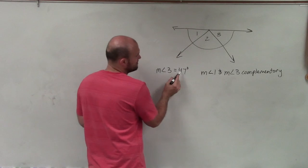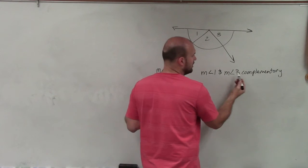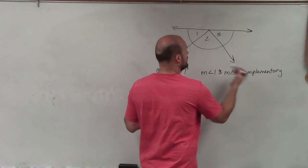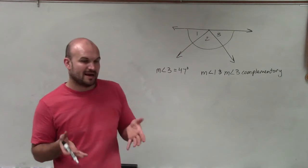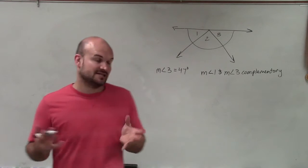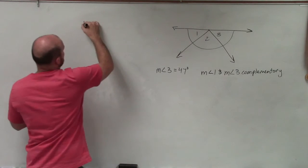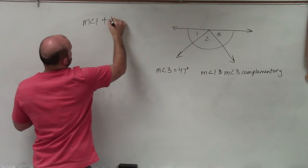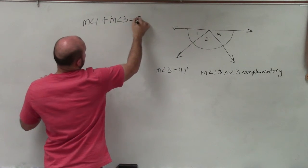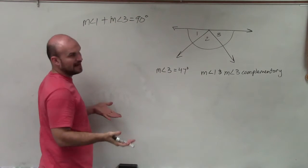So we know that the measure of angle 3 is 47. And then it says measure of angle 1 and measure of angle 2 are complementary. Well, remember, complementary means that two angles add up to 90 degrees. So what I can say is the measure of angle 1 plus the measure of angle 3 is equal to 90 degrees. That's complementary.